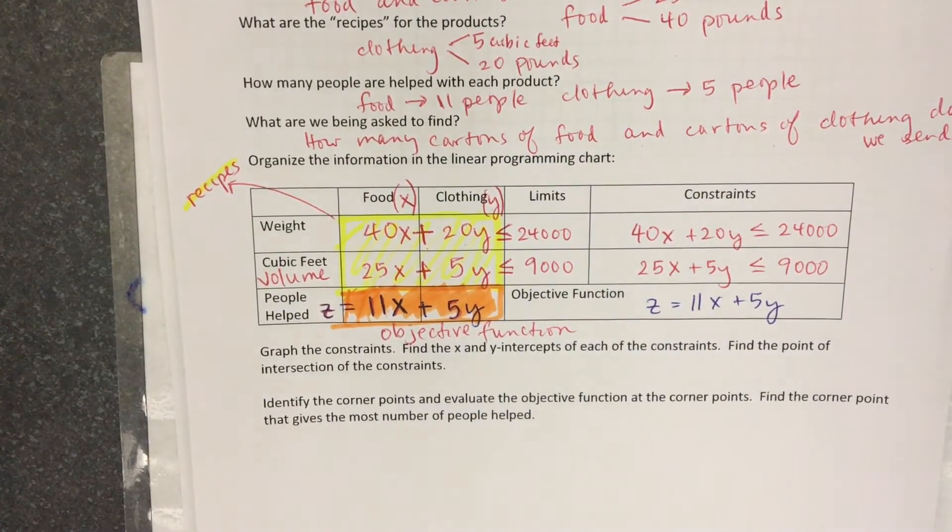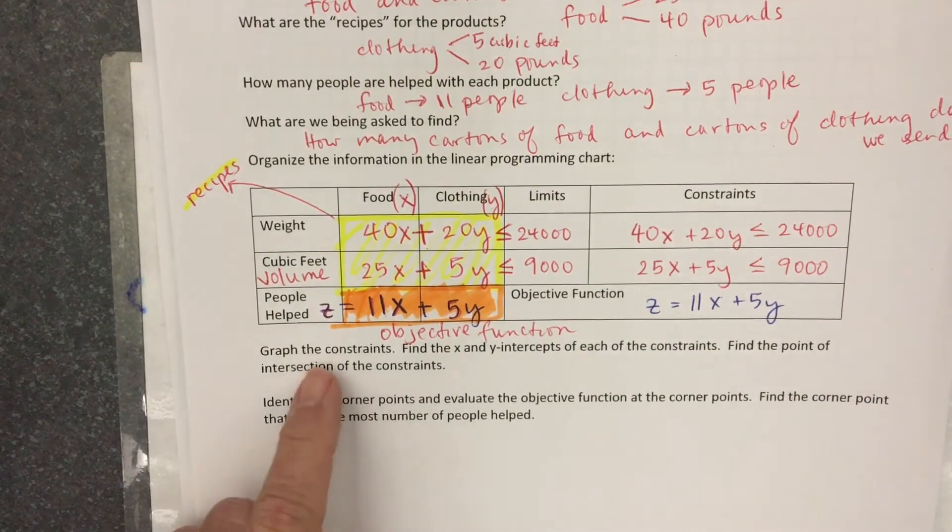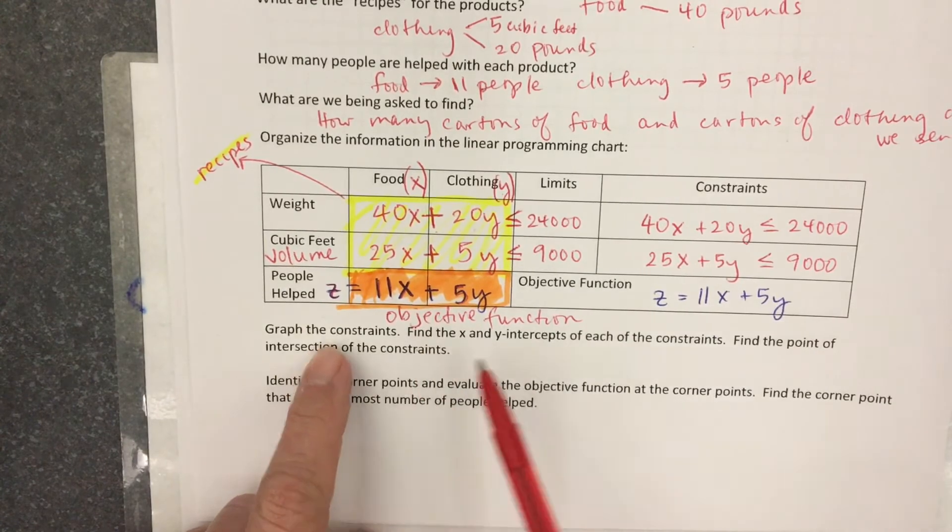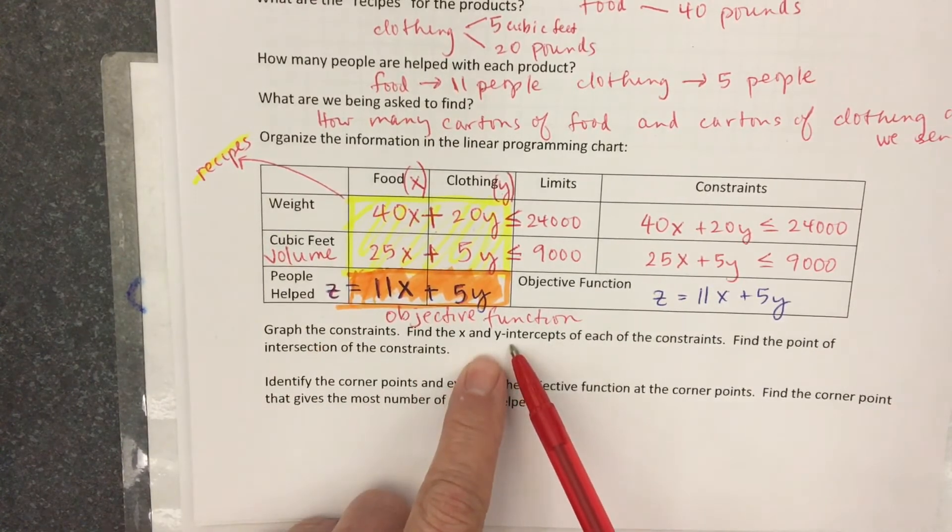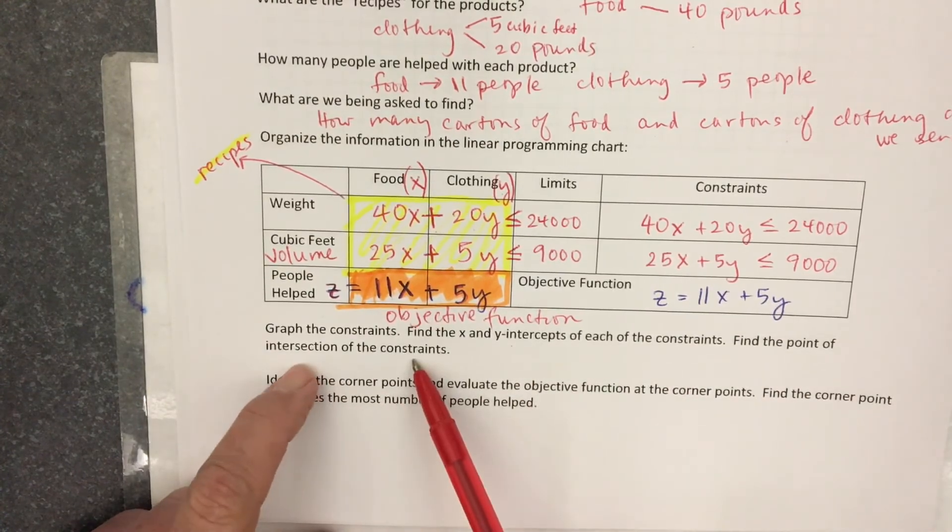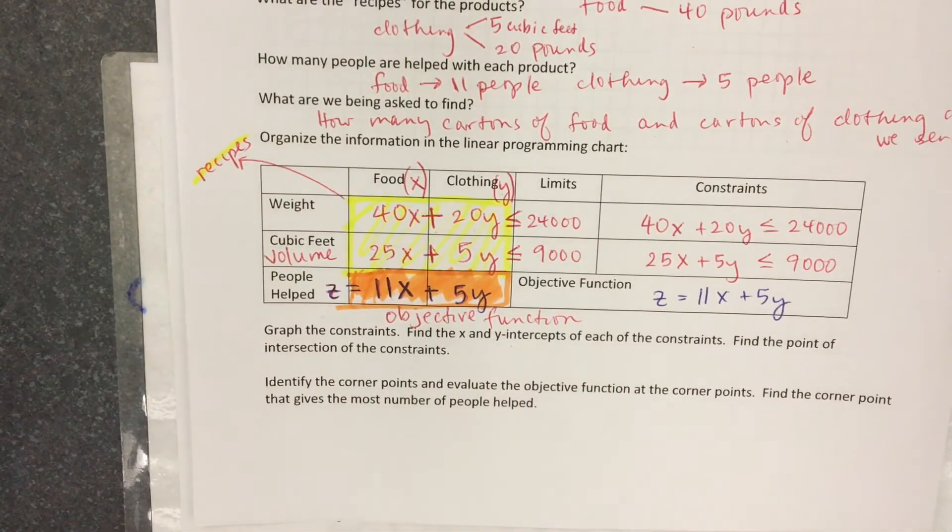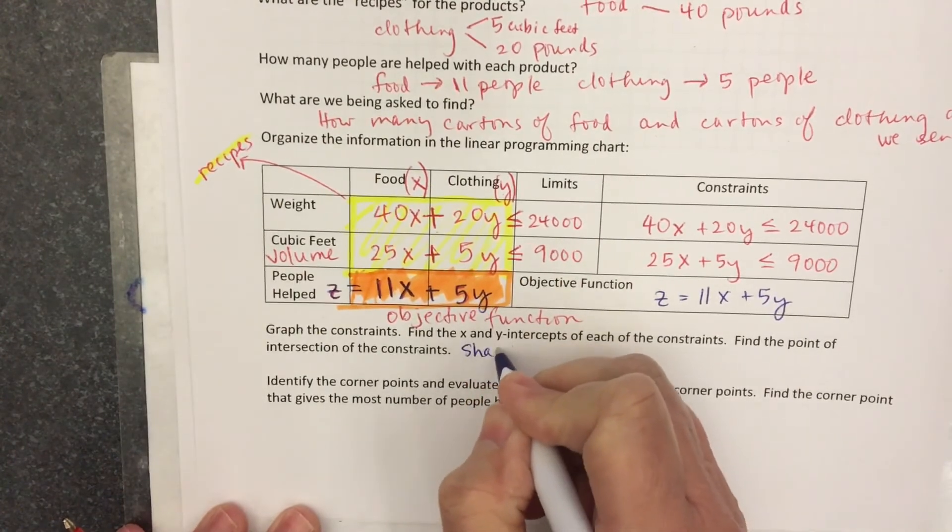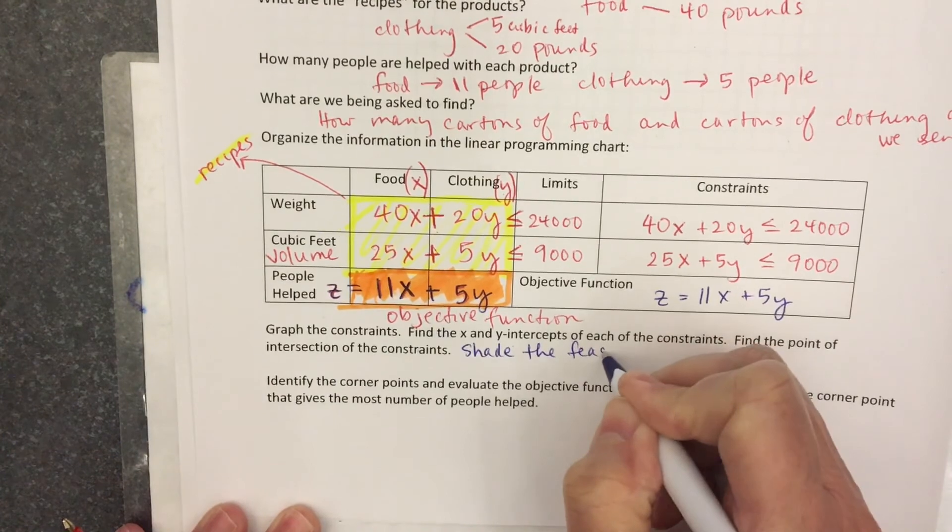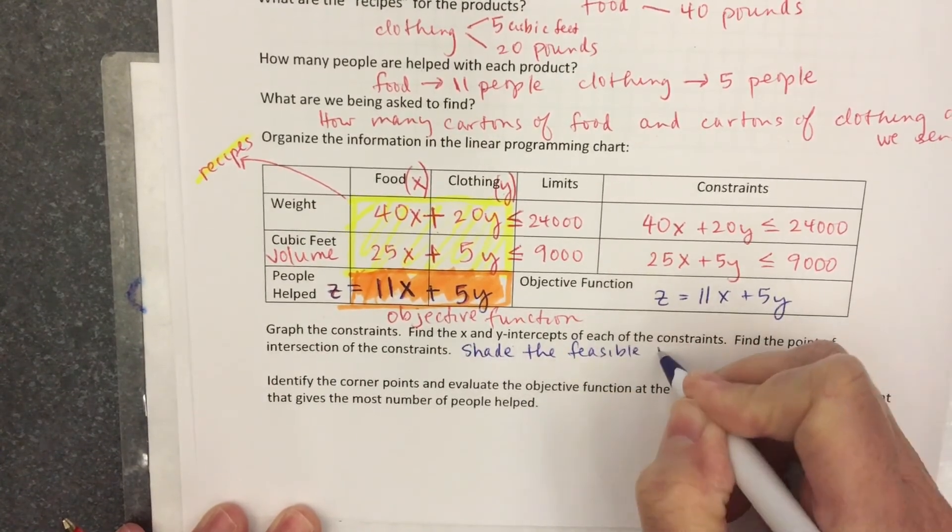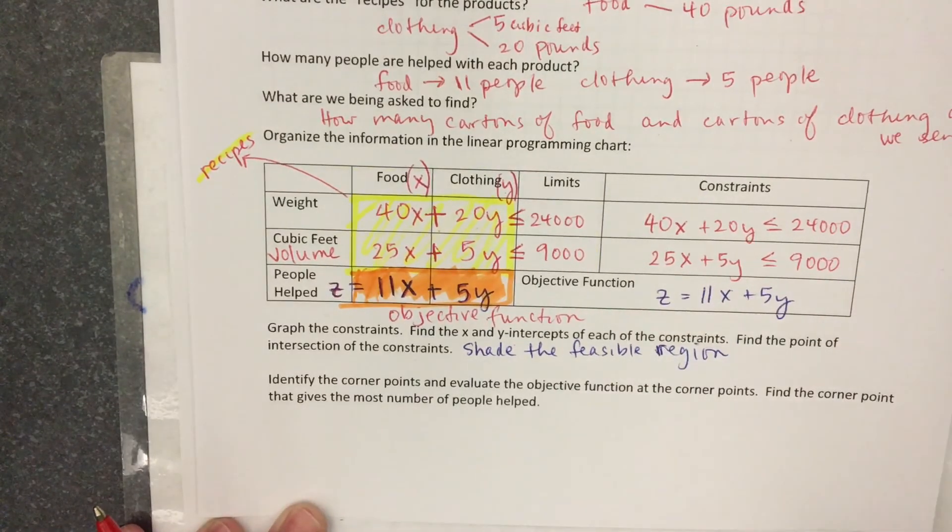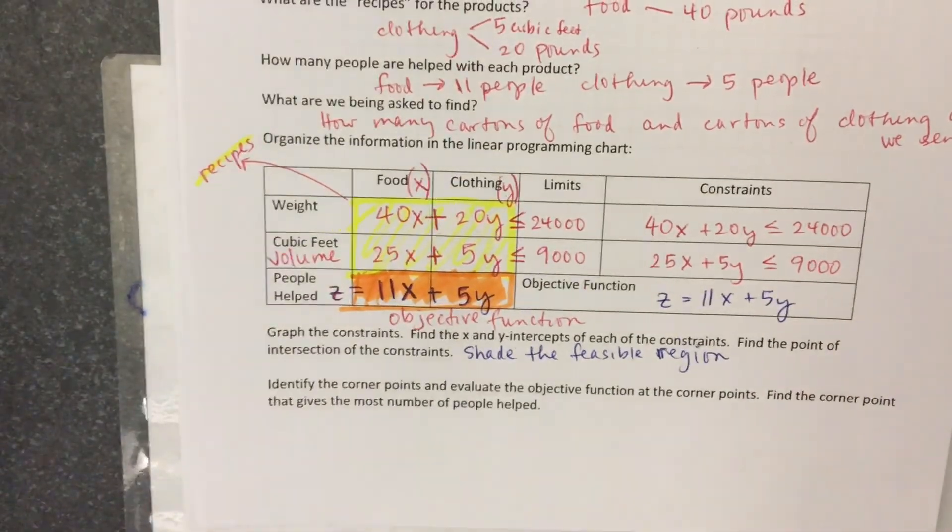So your job from here, kinda typed up right here on the worksheet: Graph the constraints. Find the X and Y intercepts. Find the point of intersection. Then we're going to, let's fill this in, I need to include it: Shade the feasible region. Okay? So I'm going to go ahead.